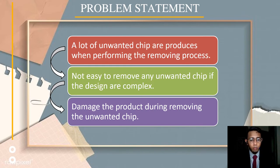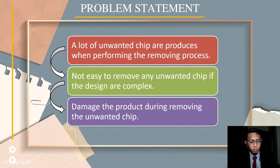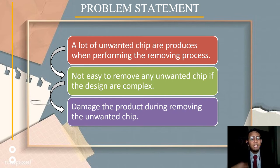For the problem statement, after we have finished printing a model, we need to remove any unwanted parts attached to the model — what we call the support. After removing the support, a lot of unwanted chips are produced. The unwanted chip is not easy to remove if the model is complex. Besides, during the removal process, people may accidentally cause some damage to the model.